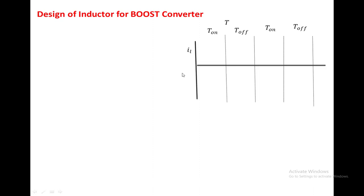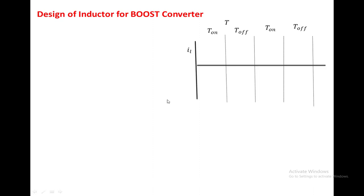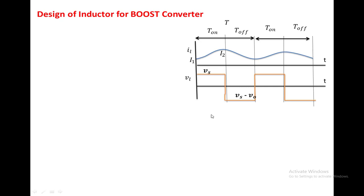Here we have taken the inductor current waveform. When the switch is on, the inductor current will be changing from minimum value I1 to I2, and again from maximum to the minimum. The voltage across the inductor when the switch is on is Vs. So Vl equal to Vs, and we can write it as L into di/dt equal to Vs.